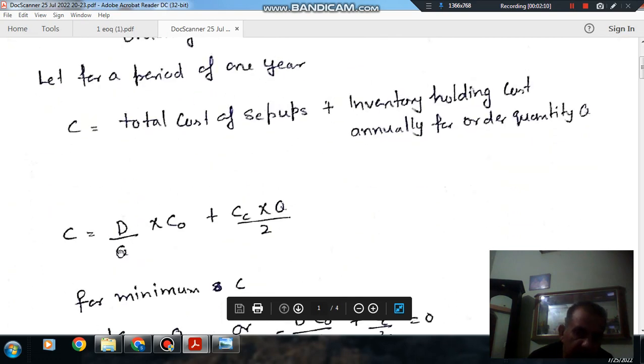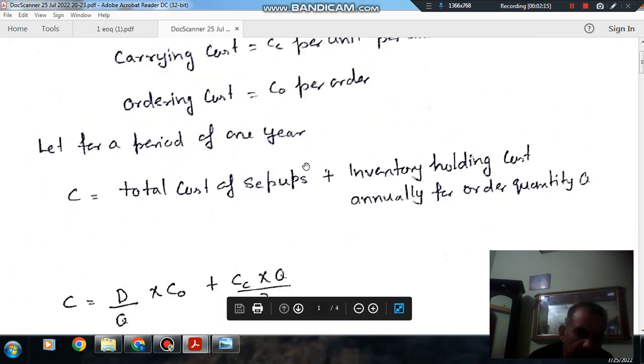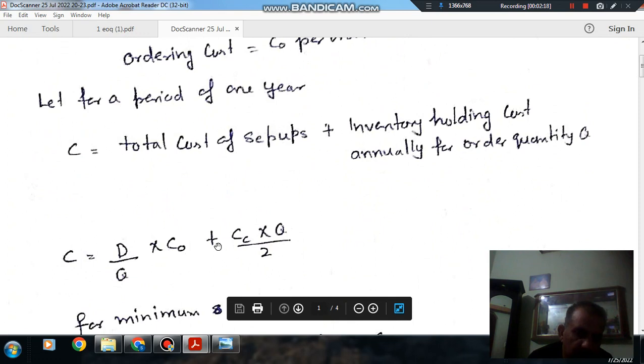So number of orders are D by Q. C is the number of orders and C0 is the cost per order, so C0 times the number of orders.